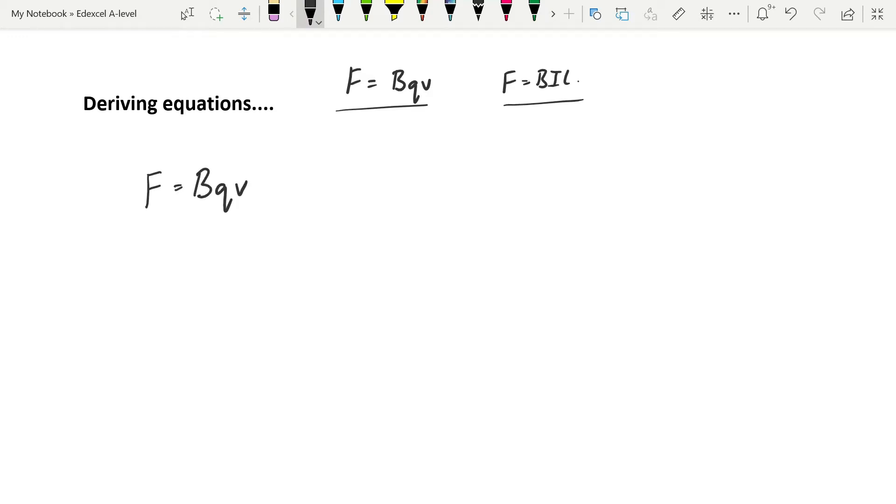So we know that this is the speed of a charged particle through a field. And we know that speed is distance over time. So we can say that the speed is the length of the wire over the time it takes a charged particle to pass through the wire that's in the field, giving us f is bq l over t.